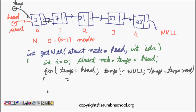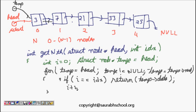What I need to do now? Because I am moving in a for loop, I will have i equals 0, and then I do here: if i is equal to idx, which means that I have found the index now, then I can return temp data. Or otherwise, what will I have to do every time? I have to do i++.